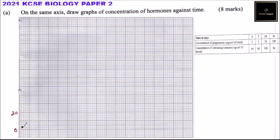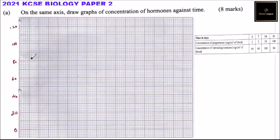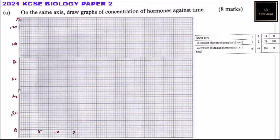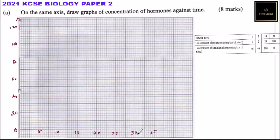For the y-axis scale, I'll use one small square to represent two units, giving values of 40, 60, 80, 100, and 120. For the x-axis, one small square represents two days, giving values of 5, 10, 15, 20, 25, 30, and 35. This x-axis represents time in days.